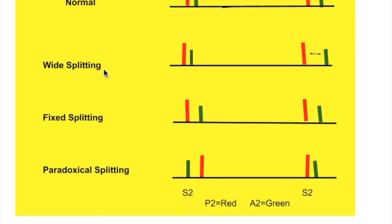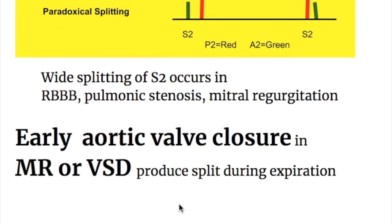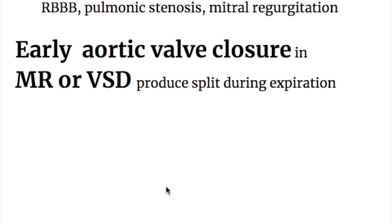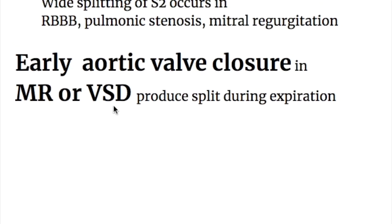In wide splitting there is an increased gap between aortic and pulmonary valve closure. In fixed splitting there is a fixed distance between the two valves during both inspiration and expiration. In paradoxical or reverse splitting, the pulmonary valve closes before the aortic valve — a reversed split that occurs in expiration. Wide splitting occurs in right bundle branch block, pulmonary stenosis, and mitral regurgitation. Early aortic valve closure in mitral regurgitation or ventricular septal defect also produces splitting during expiration.